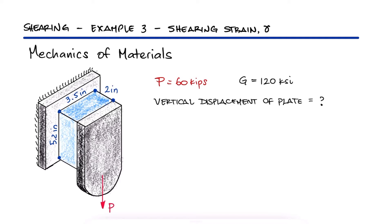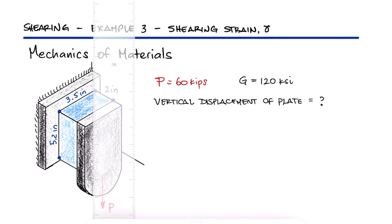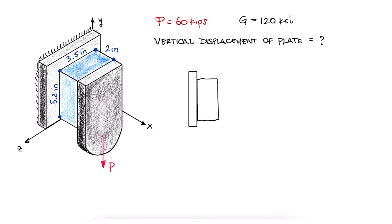This is the third example for the shearing stress and strain main video. Links to the previous two examples in that main video are in the description below. If we look at this setup from the positive z-axis,